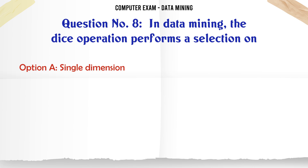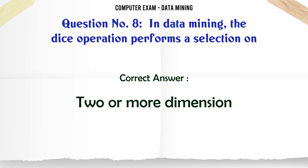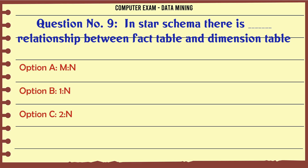In data mining, the dice operation performs a selection on: A. Single Dimension. B. Only on 2 Dimensions. C. Two or more Dimensions. D. None of the above. The correct answer is Two or more Dimensions.